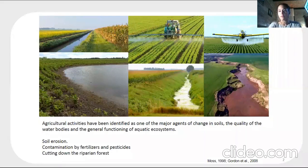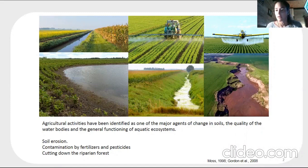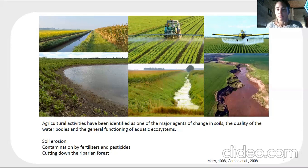As we all know, agricultural activities have been identified as one of the major agents of change in soil quality, water bodies, and the general function of aquatic ecosystems. The intensification of agricultural activities can cause diffuse transfer of nutrients — phosphorus and nitrogen — to the receiving water bodies through runoff.